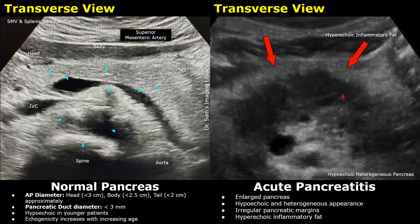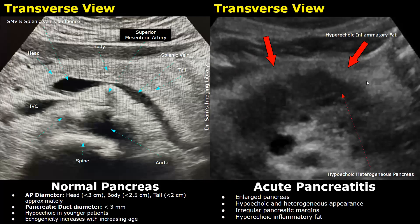The size of the gland is normal. In the image on the right, the pancreas is enlarged and has irregular margins. Irregular margins can be seen in cases of acute pancreatitis. You can also notice the hyperechoic inflammatory fat surrounding the inflamed pancreas.